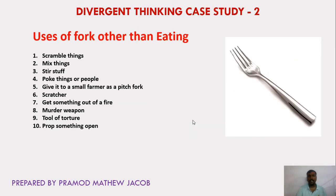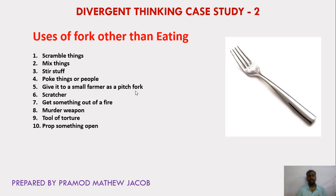The second case study: identify the uses of a fork other than eating. A fork can be used for scrambling, mixing, or stirring liquids. It can be used to pop things or even people, as a pitchfork for digging small pits, or for taking something out of fire since it is made of steel and will not catch fire. It can also be used as a weapon, as a tool for torturing, or as a property to open tight container lids.